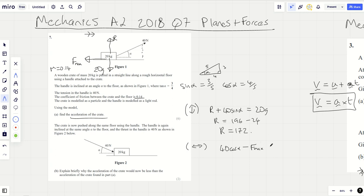This equals mass times acceleration equals 20a. Now remember that we can work out f max because f max is mu R. That's 0.14 times 172. Let me just get my calculator out, 0.14 times 172, that comes to 24.08.